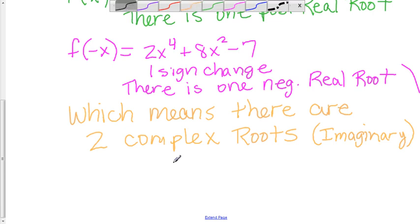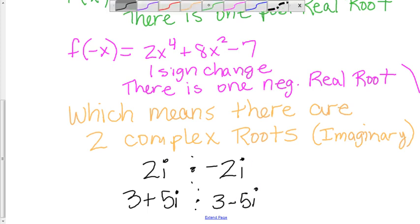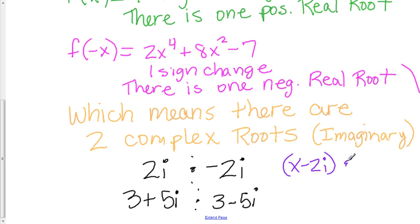Imaginary roots can take on the form, say, something like 2i and negative 2i, or 3 plus 5i and 3 minus 5i. If you were going to write the linear factors for them, for 2i and the negative 2i, that would be x minus 2i and x plus 2i.